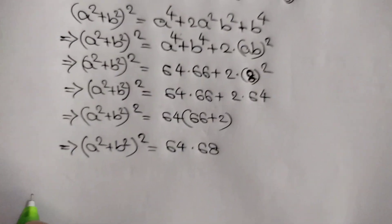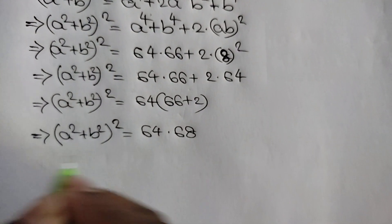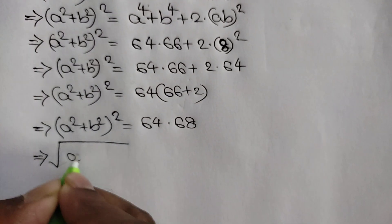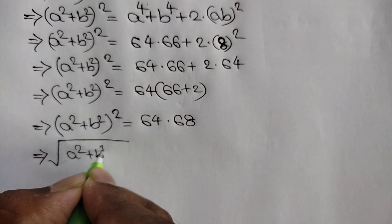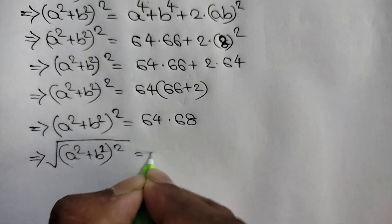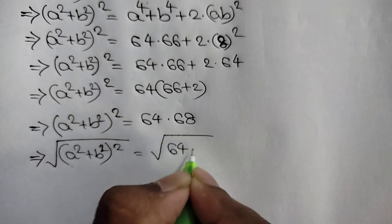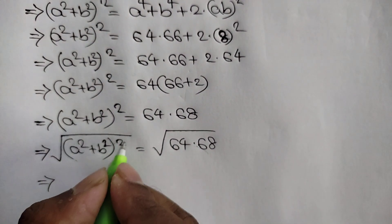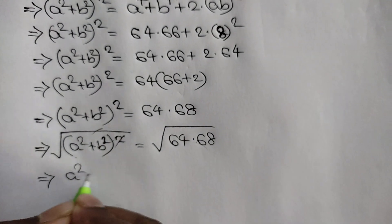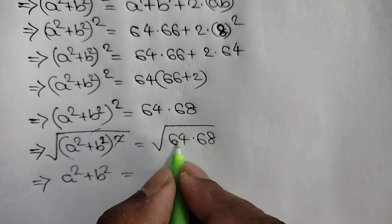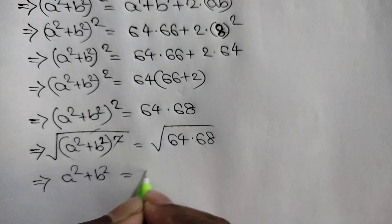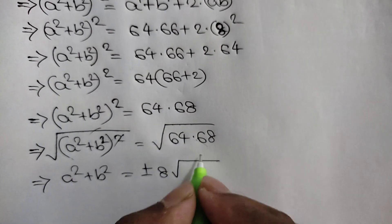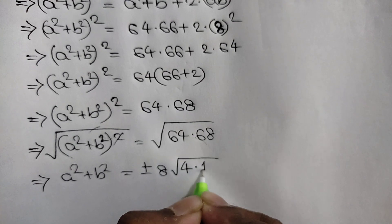Now, to remove the square, we can apply square root to both sides. So the square root of a squared plus b squared whole squared is equal to the square root of 64 times 68. The square cancels with the square root. So a squared plus b squared is equal to the square root of 64 times the square root of 68. The square root of 64 is plus or minus 8, and the square root of 68, we can write as 4 times 17.